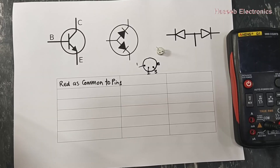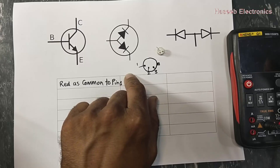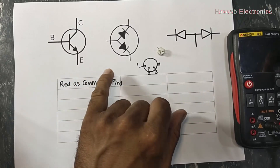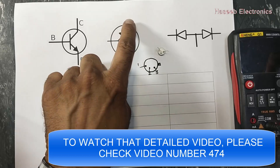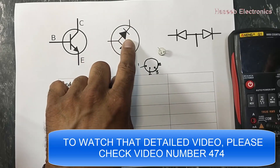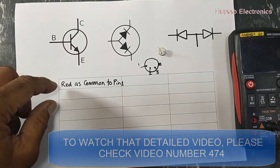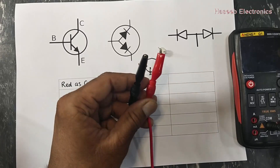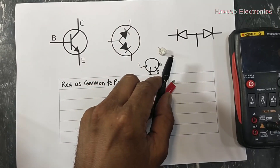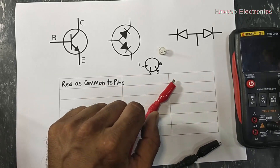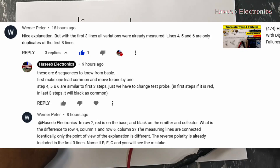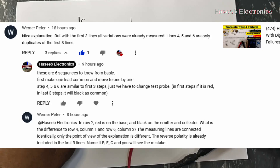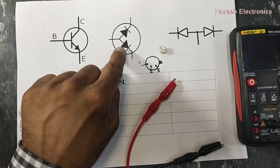Assalamualaikum warahmatullahi wabarakatuhu, friends. Welcome back to my channel. This is a continuation of my video number 474, in which I discussed how to test a transistor — how to identify pins, how to identify emitter, base, and collector, how to identify the material. I found a comment from one of my viewers: 'Nice explanation, but the first three variations were already measured — lines 3, 4, 5, and 6 are only duplicates.' So let's check this and discuss the theory behind selecting test probes for testing.